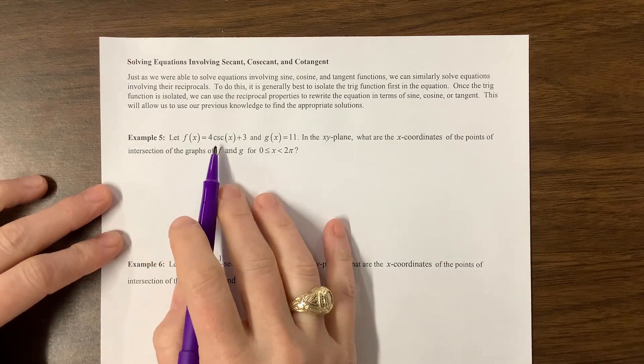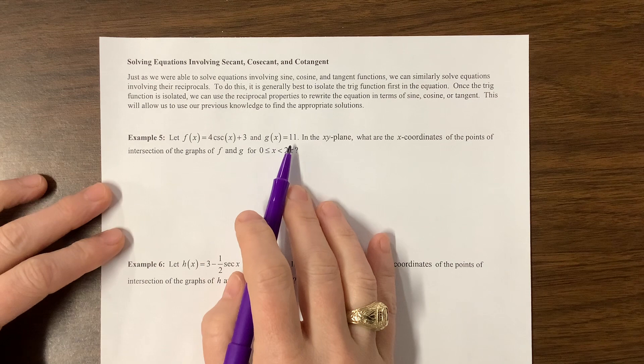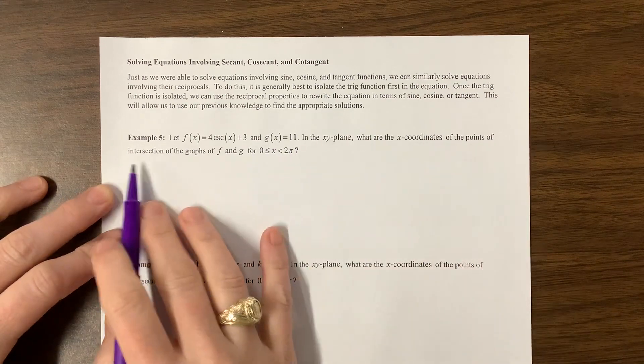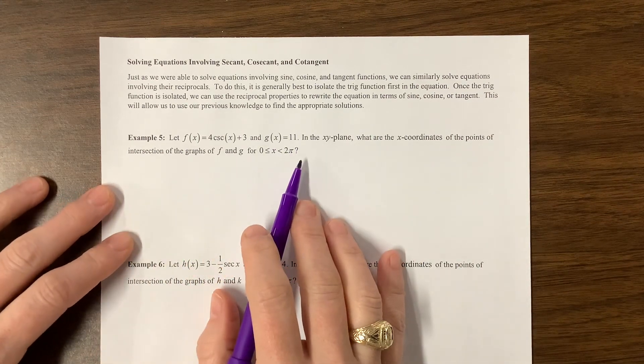Let f of x equal 4 cosecant x plus 3 and g of x equal 11. What are the coordinates of the points at the intersection of the graph for 0 to 2π? Okay.